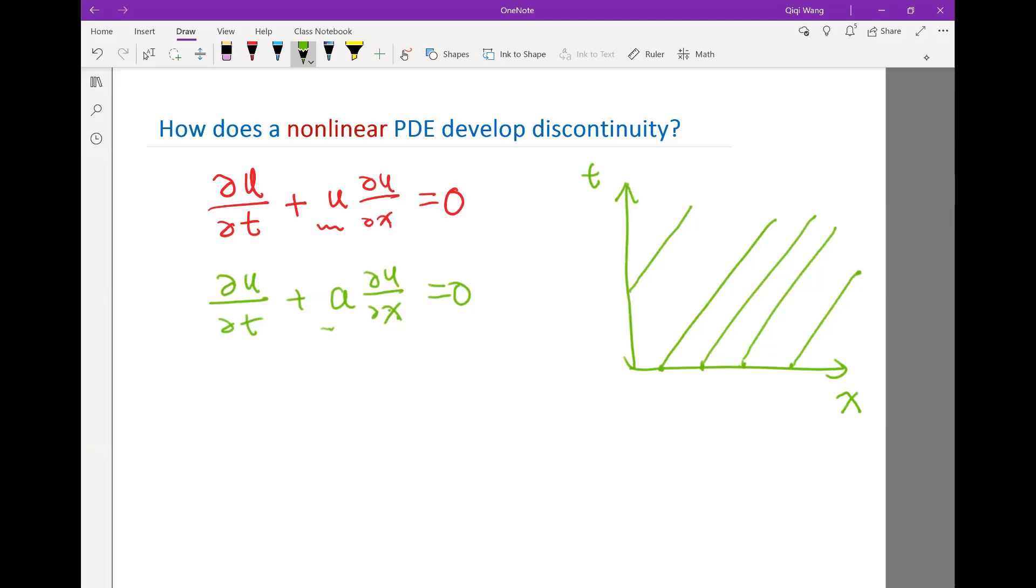But if we have u here instead of a, what would the solution be like? Does anybody remember what the solution is going to be if we have a u here as opposed to a constant a?